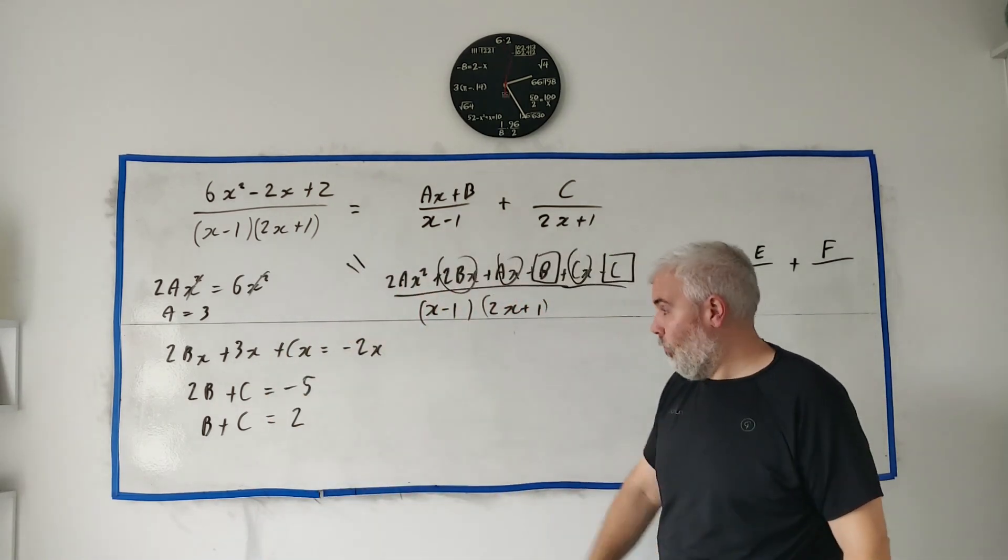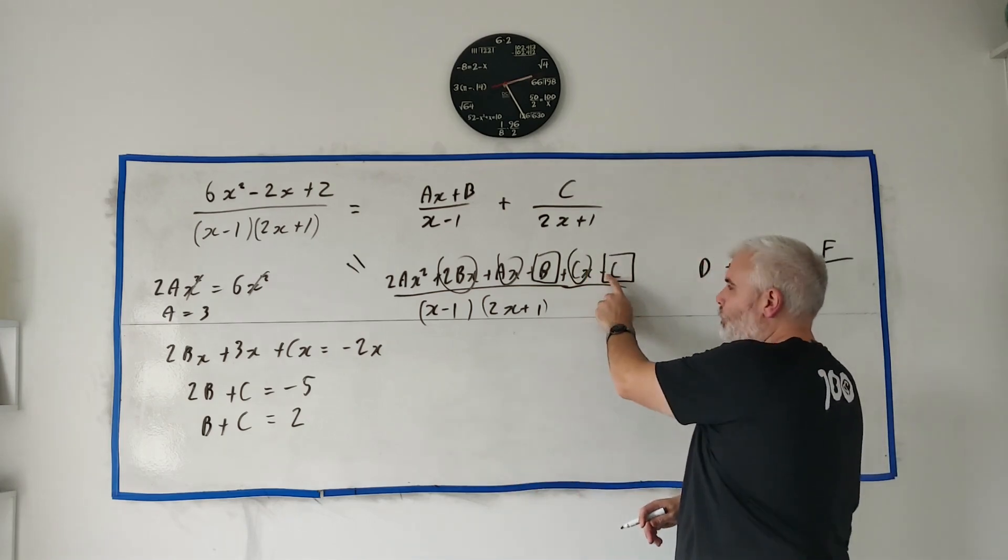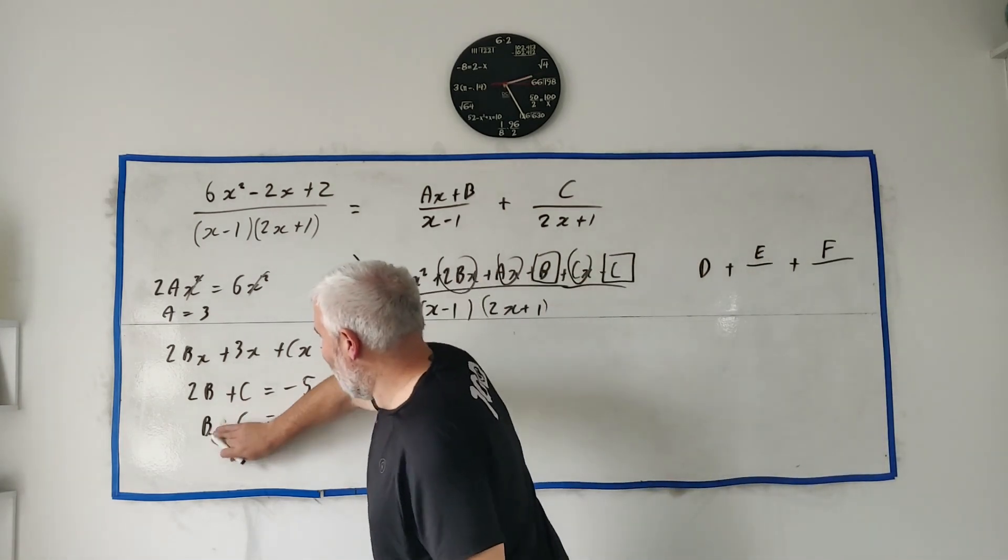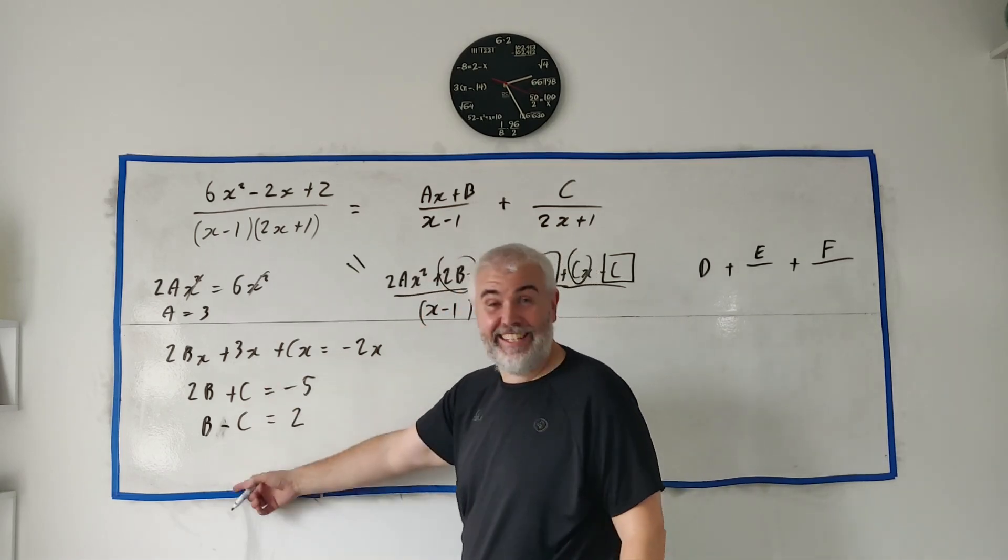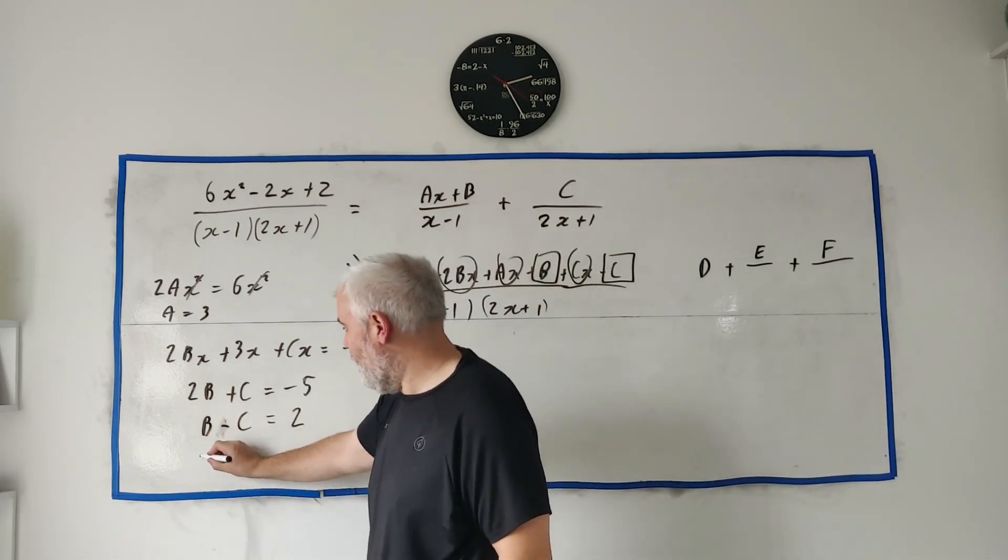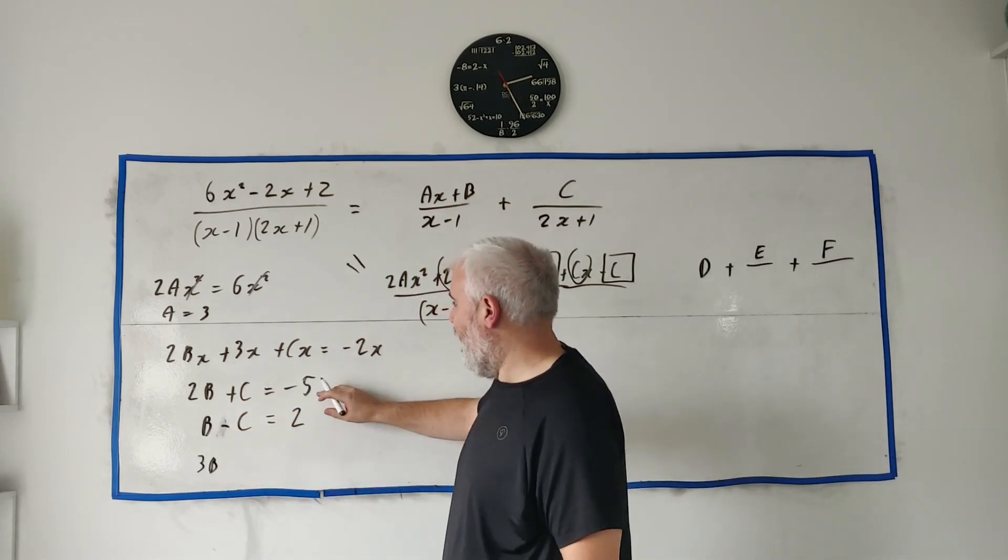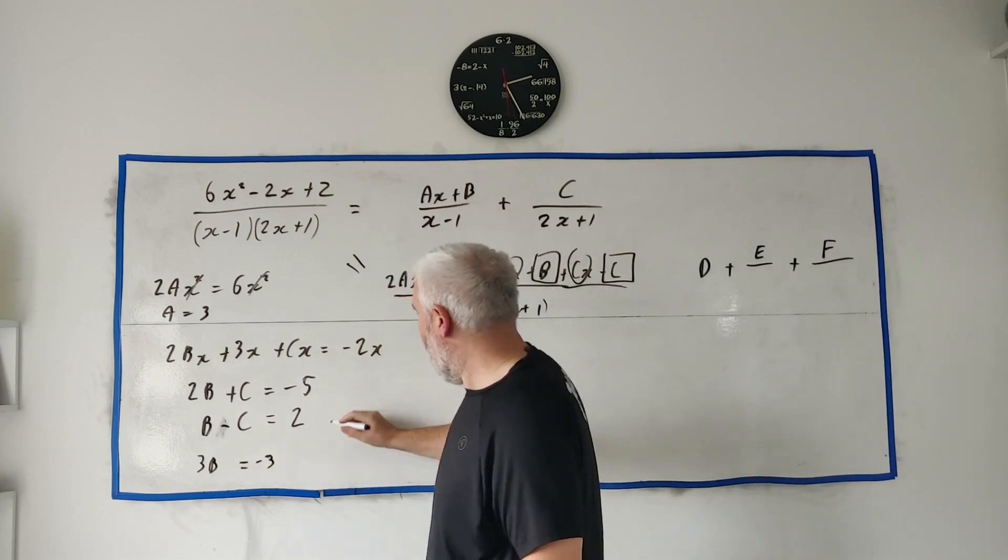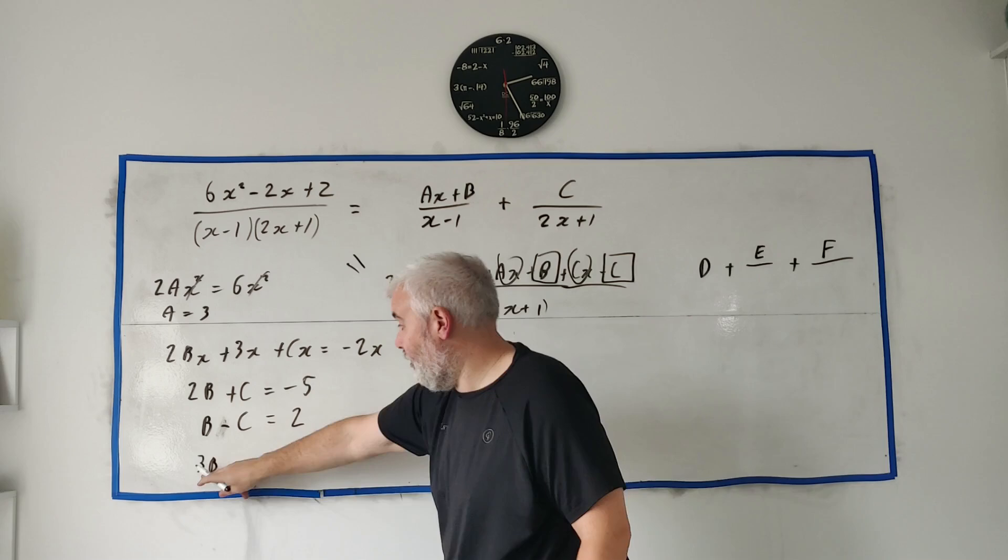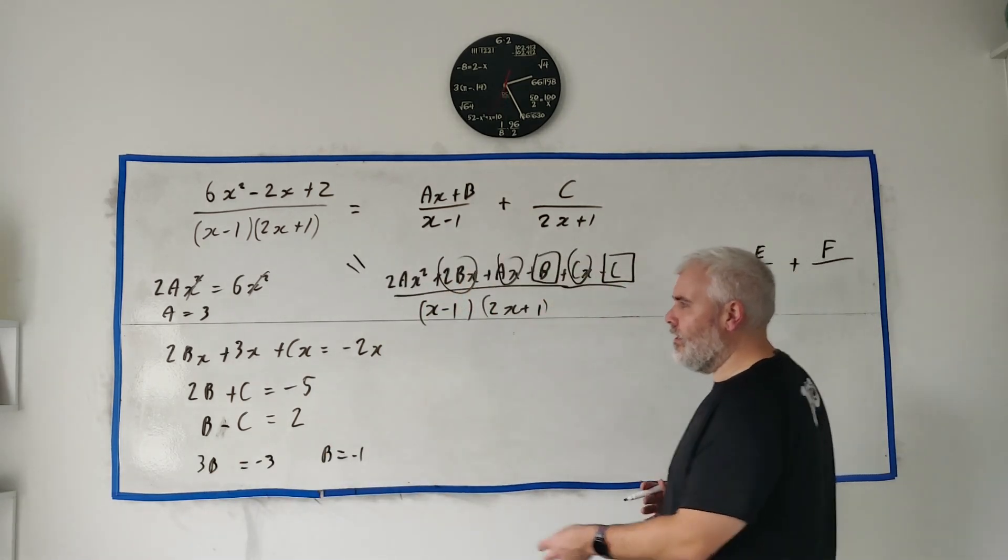That's a simultaneous equation, quite an easy one to solve. In fact it would be if I remember to put this minus in which is here. So now it's quite an easy one to solve. We just add these together: 2b plus b is 3b, c plus minus c is nothing, and minus 5 plus 2 is minus 3. We equate, we divide both sides by 3, b is minus 1.